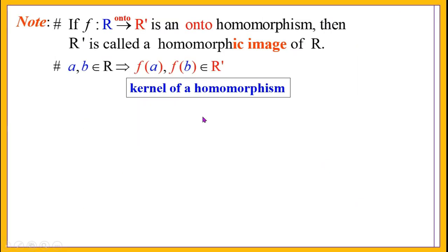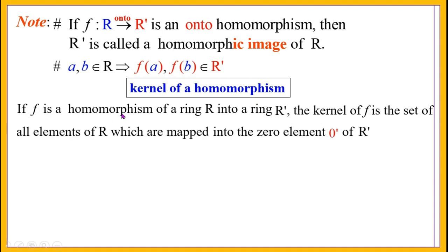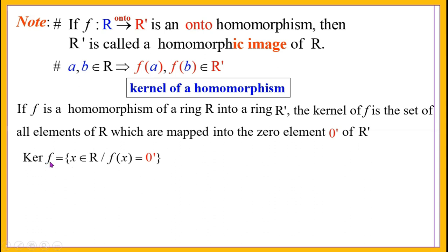We will now define what is the kernel of a homomorphism. If f is a homomorphism of a ring R into a ring R', the kernel of f is the set of all elements of R which are mapped into the zero element, namely 0' of the ring R'. That is, kernel of f equals the set of all x in R such that f(x) = 0'.